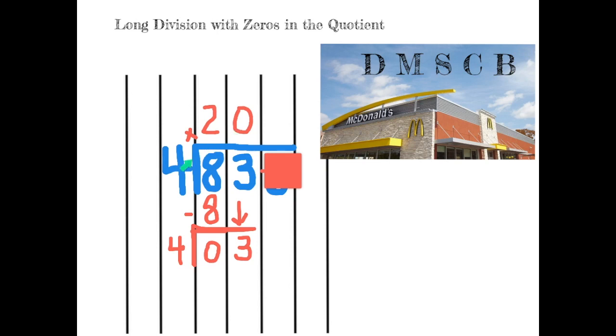The next step is to check and see if there's anything else to bring down. We do in fact have another digit to bring down: the 6. I don't know where that little red line came from, but we're not going to let it bother us. So I'm going to bring down the 6.